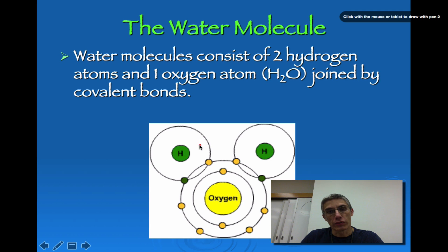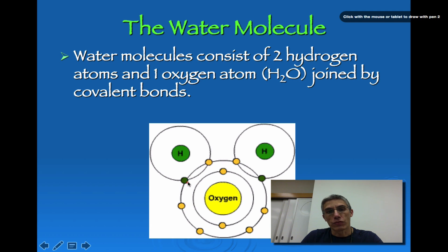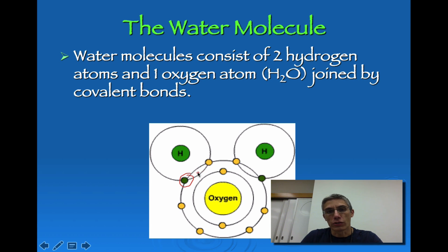A covalent bond is a bonding mechanism that actually shares an electron between two atoms. Down here towards the bottom, you can see the oxygen atom, and towards the top are the two hydrogen atoms. The yellow and green spheres represent the electrons surrounding the nucleus of each atom. The nucleus is made up of protons and neutrons. This particular electron is shared with the oxygen, and that bonding that occurs is a covalent bond.